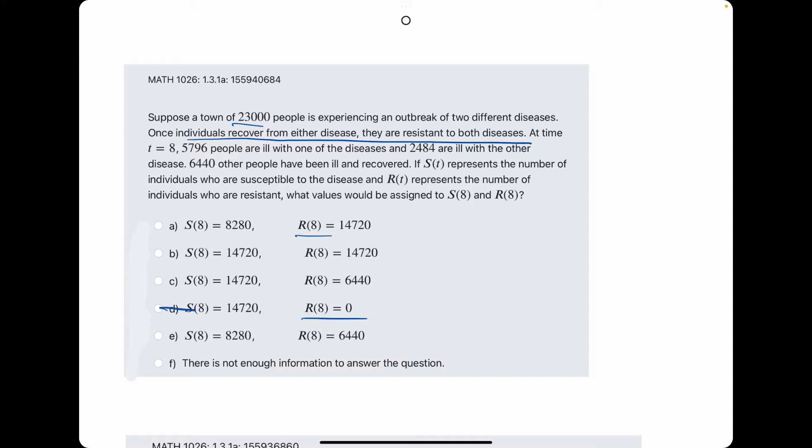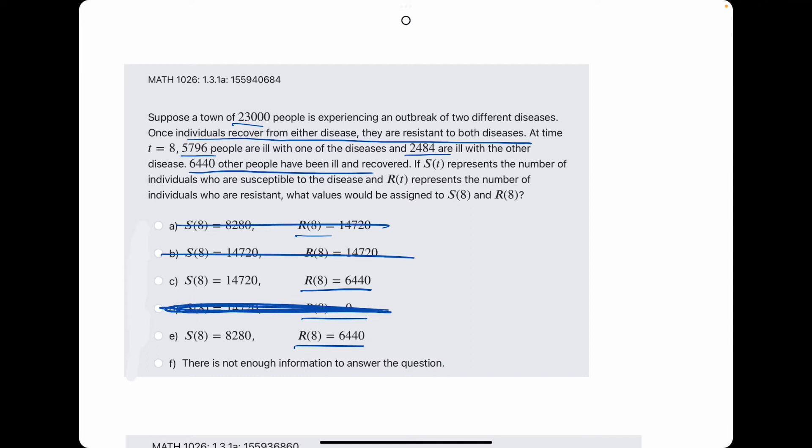So, we can eliminate the one that has R equals 0 because people will be resistant in this case. So, it says we have this many people ill with one, this many people ill with the other. It says 6,440 have been ill and recovered. So, hopefully just 6,440 is our recovered or resistant amount. So, we can eliminate options A and B because the people who have been ill and recovered are now those who are resistant.